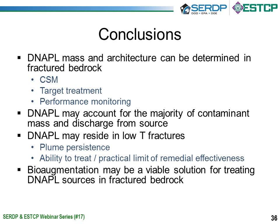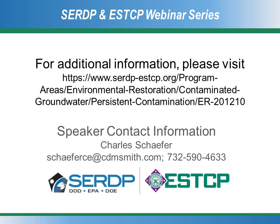In conclusion: DNAPL mass and architecture can be determined or at least estimated in fractured bedrock, and we can learn a lot about the conceptual site model by examining this. DNAPL may account for the majority of contaminant mass and discharge from the source area, particularly in rock with a relatively low matrix porosity. DNAPL may reside in low transmissivity fractures and could be what is sustaining these plumes. And finally, bioaugmentation may for many sites be a viable solution for treating DNAPL sources in fractured bedrock.